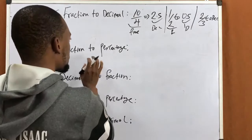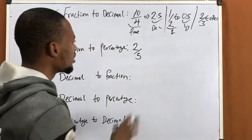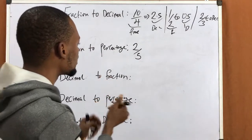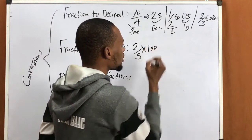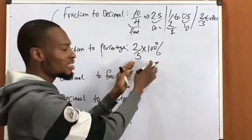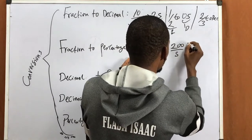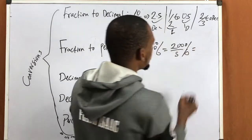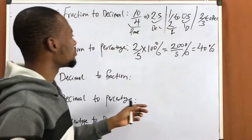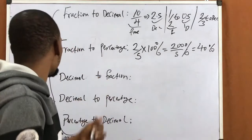Now, converting from fraction to percentage. Let's say you are given 2 over 5 — this is the numerator and this is the denominator. To convert this to percentage, simply multiply by 100 and add the percentage sign. So 2 times 100 gives you 200 over 5 percent. 200 divided by 5 gives you 40%. So 2 over 5 equals 40%. It's very easy.